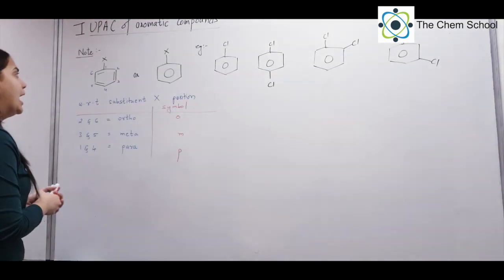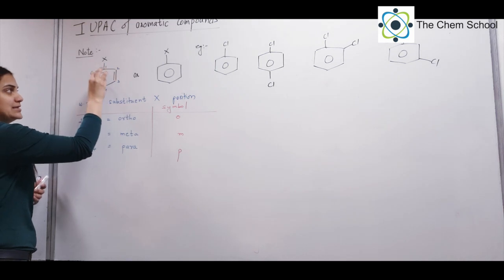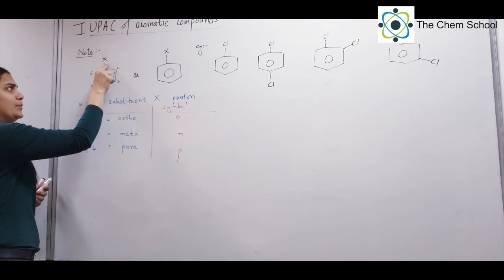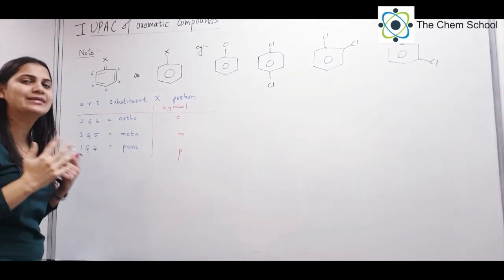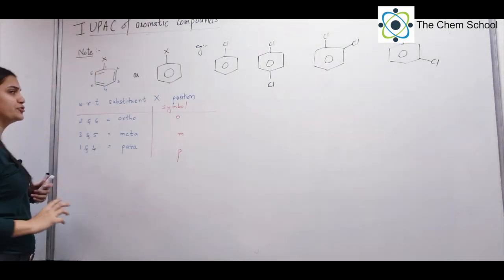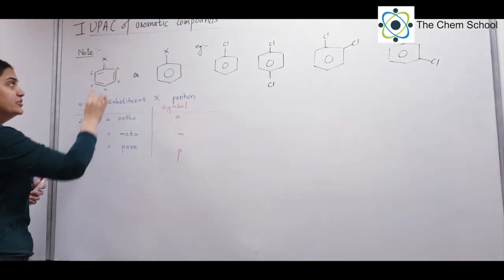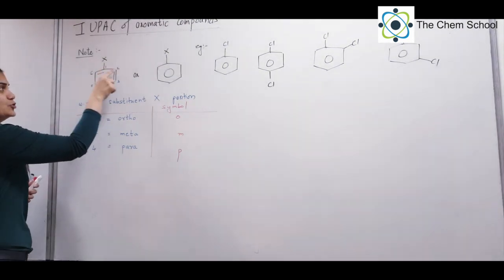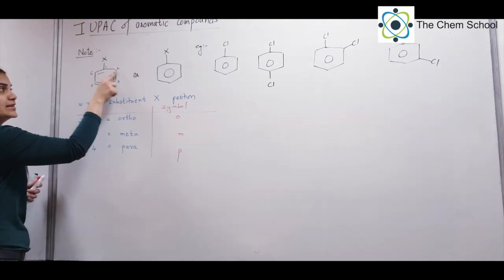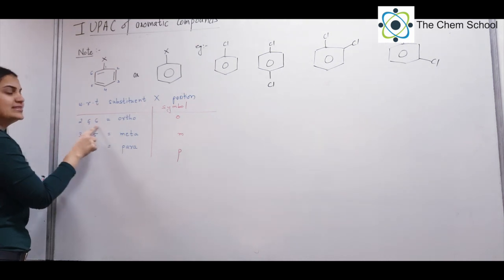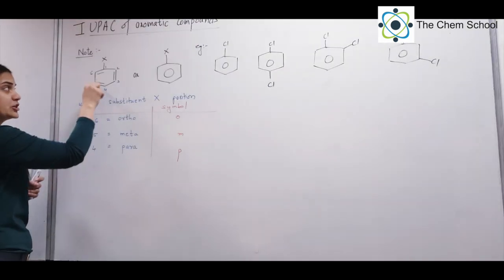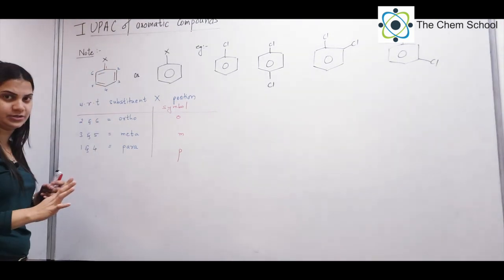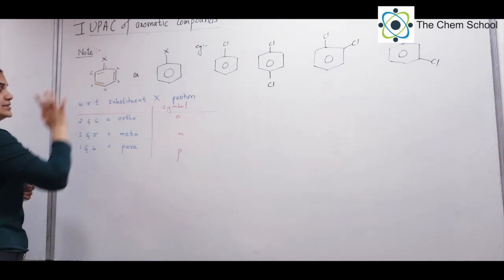Now imagine you have this aromatic compound and you want to attach a substituent — say a halogen — at any position. The substitution position gets numbering 1. Now with respect to 1, where can you go for substitution? The positions 2 and 6 in benzene are the ortho positions. I repeat: with respect to 1, positions 2 and 6 are ortho positions.